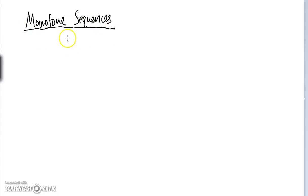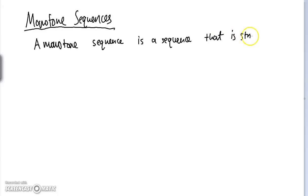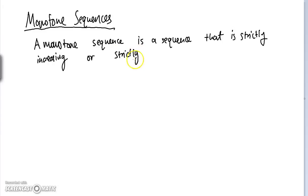Now we're going to look at monotone sequences. We've already shown what the limit of a sequence means in the previous video. Today we're going to discuss the limit of monotone sequences. A monotone sequence is a sequence that is strictly increasing or strictly decreasing.